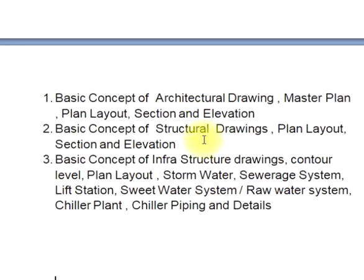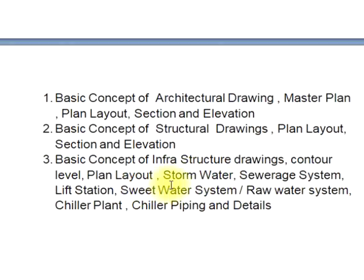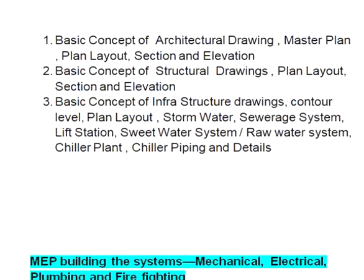We will also cover contour plans, layout, and stormwater service systems — from water plants to piping. You must know the infrastructure works. If you are going to design a city or town, you need to know the sewerage system, sweet water, potable water, non-potable water, and stormwater drainage systems in roads and around the city.